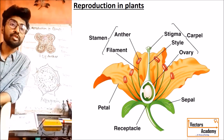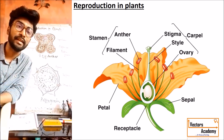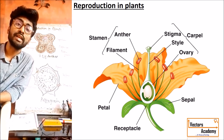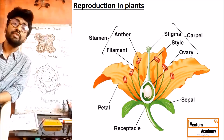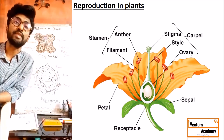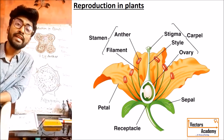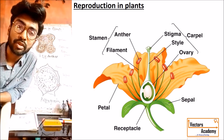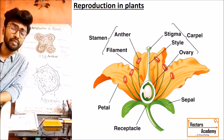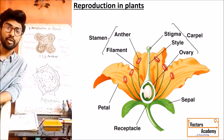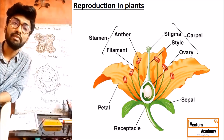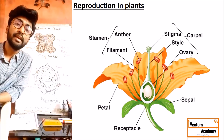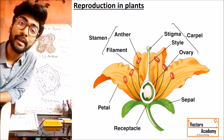Flower is basically divided into two parts: one is called essential whorls and second is called non-essential whorls. Essential whorls are the parts of the flower which generally participate in sexual reproduction. Non-essential or accessory whorls never participate in sexual reproduction. Non-essential parts are calyx and corolla — calyx being the outermost whorl and corolla the second inner whorl. Calyx is made up of sepals and corolla is made up of petals.